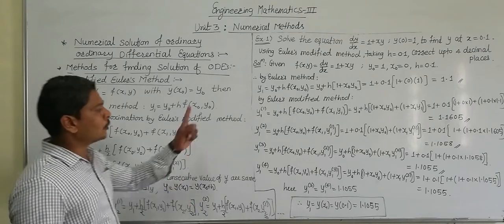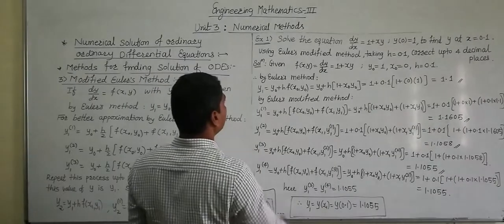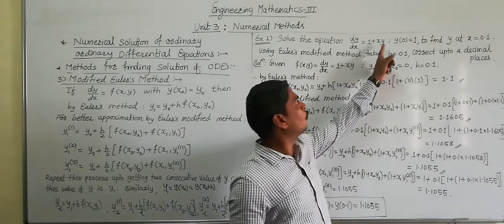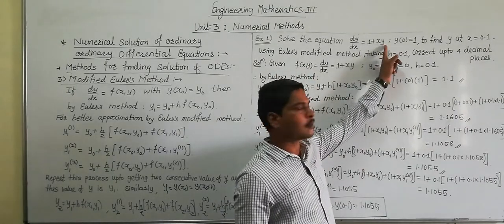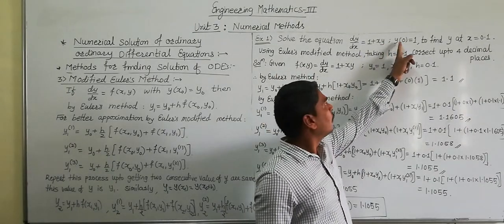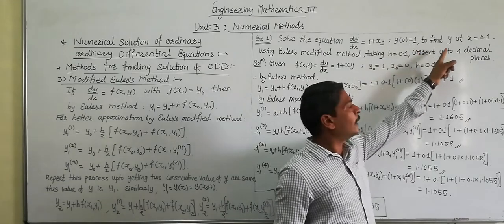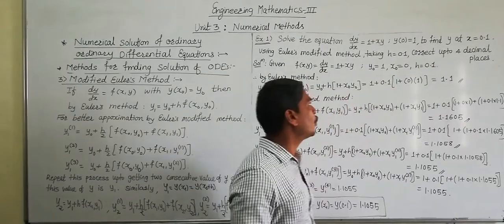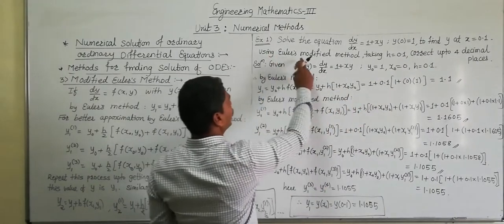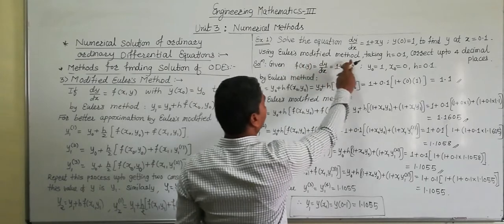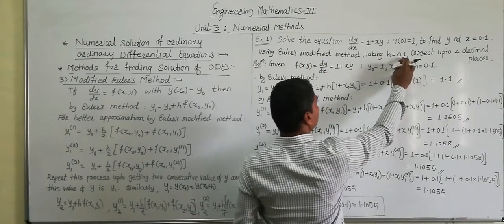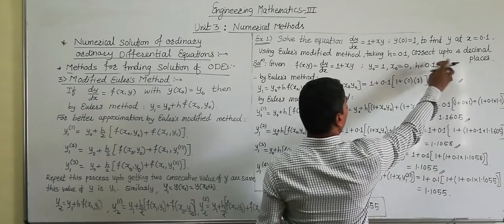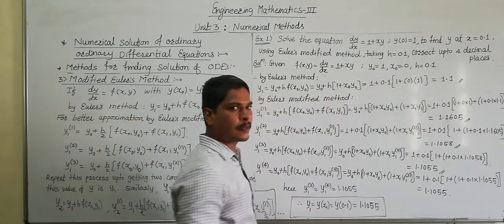Now for the first example: solve the equation dy/dx equal to 1 plus xy, with y of 0 equal to 1, to find y at x equal to 0.1, using Euler's modified method, taking h equal to 0.1, correct up to 4 decimal places.